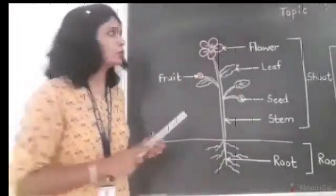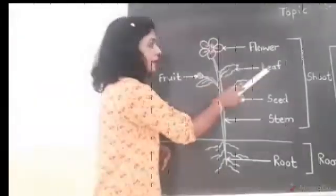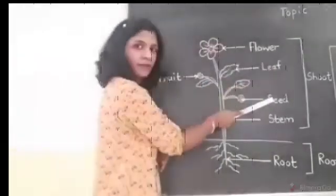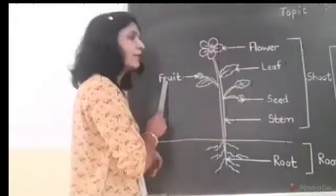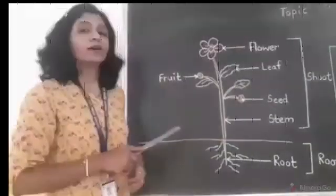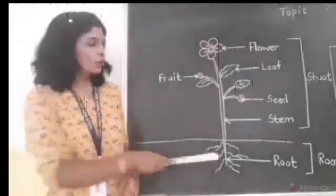In shoot, it includes flower, leaf, seed, stem and fruit. And its root, it includes root only.